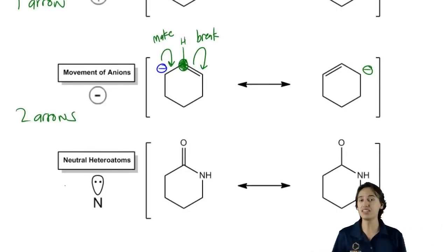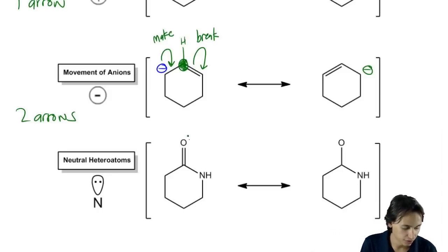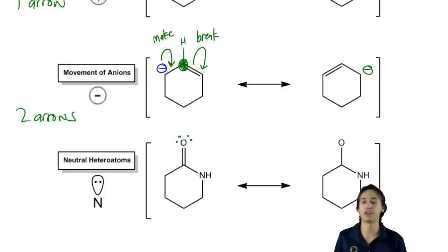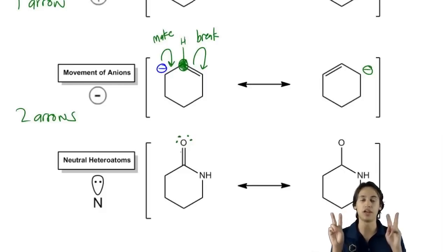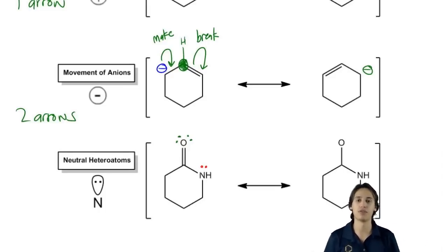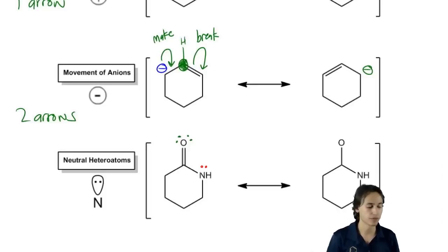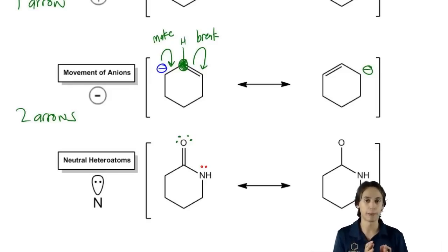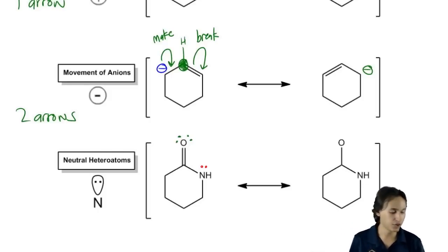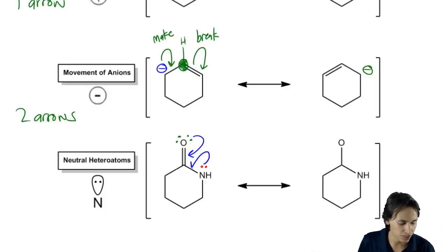Now let's look at neutral heteroatoms. Remember that we can move double bonds and lone pairs. Imagine oxygen has two lone pairs — because oxygen has a bonding preference of two bonds and two lone pairs. And nitrogen has one lone pair — because nitrogen has a bonding preference of three bonds and one lone pair. This is how each satisfies its octet and valence. So is there any way I can turn one of these lone pairs into a double bond without breaking an octet? Basically the two options are: move one of the oxygen lone pairs down to make a triple bond, or move one of the nitrogen lone pairs to make a double bond.